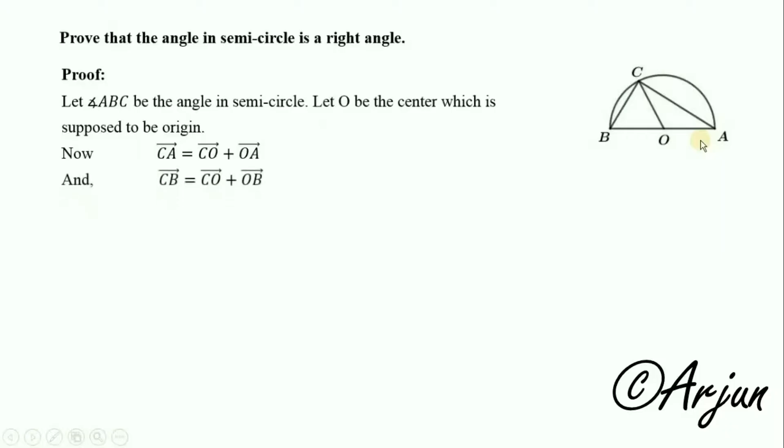And similarly, CB equals CO plus OB. Since OB equals negative OA (as O is the origin), we have CB equals CO minus OA.